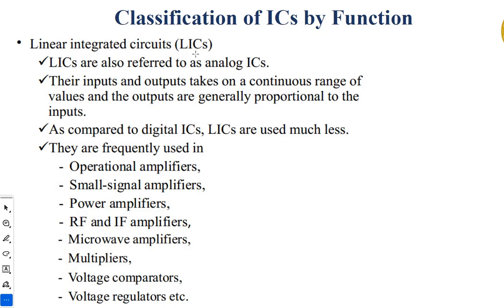Linear ICs — LICs — are linear integrated circuits, also known as analog ICs. Their inputs and outputs are taken as a continuous range of values, and outputs are generally proportional to the input. Compared to digital ICs, LICs are used less. They are frequently used in op-amps, small signal amplifiers, power amplifiers, RF and IF amplifiers, microwave amplifiers, multipliers, voltage comparators, voltage regulators, etc.